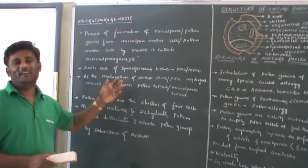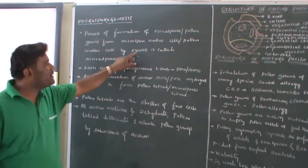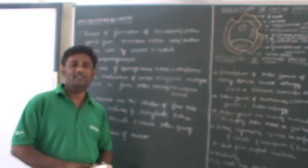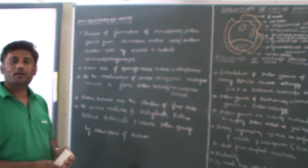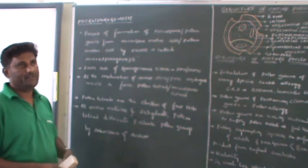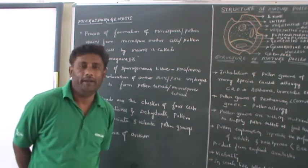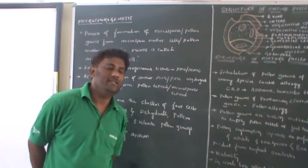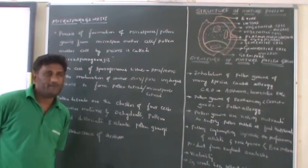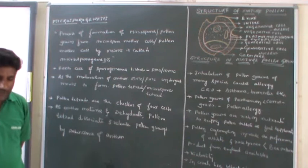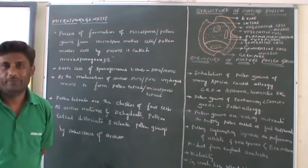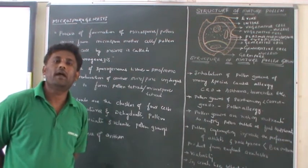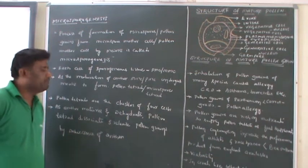Let us look at the concept of microsporogenesis. Here a special type of division is involved, that is known as meiotic division. As you know, meiosis is a reductional division where the ploidy of the cell will alter or change. That is why the ploidy of the microspore mother cell is diploid, and after the meiotic division there will be formation of haploid cells. That is why microsporogenesis is the process of formation of haploid pollen grains or haploid microspores from the diploid microspore mother cell or diploid pollen mother cell.